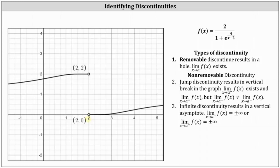So to be more specific, at x equals two, the function has jump discontinuity. From a calculus standpoint, jump discontinuity results in a vertical break in the graph, and the one-sided limits exist but they don't equal each other. Looking at the graph, as we approach x equals two from the left, we can see the function value approaches positive two. As we approach x equals two from the right, we approach the function value of zero. So the one-sided limit exists, but the two one-sided limits don't equal each other, giving the function jump discontinuity at x equals two.